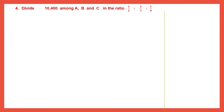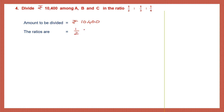Question 4. Divide 10,400 rupees among A, B, and C in the ratio 1/2 is to 1/3 is to 1/4. The amount to be divided is 10,400 rupees. When there are three terms in a ratio with fractions, let's find the LCM of the denominators first — 2, 3, and 4.